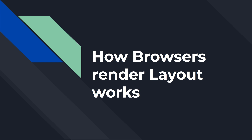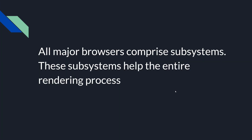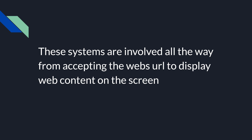This video is about how browsers' render layout works. All major browsers comprise subsystems — subsystems meaning phases or stages — and these stages help the entire rendering process. Rendering process means how the browser displays the web page on the screen. In order to show the web page on screen, the page undergoes many stages, and this is called the rendering process.